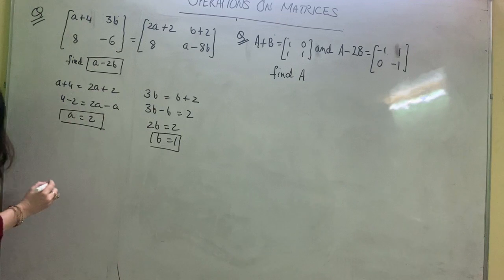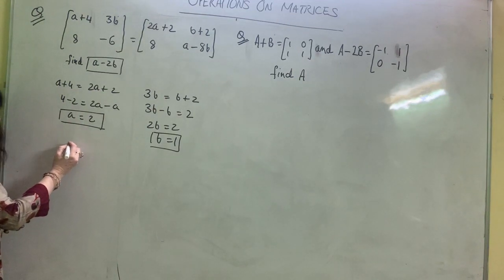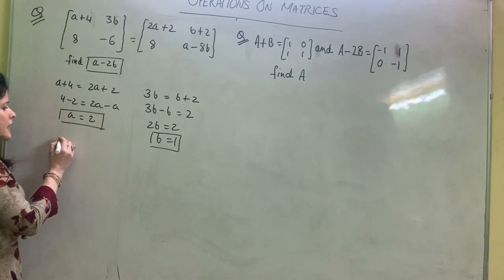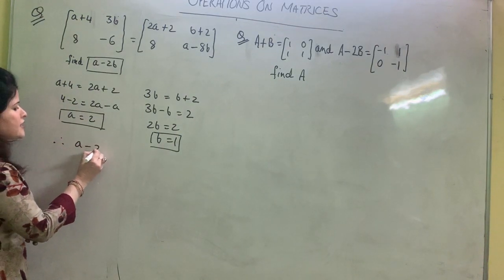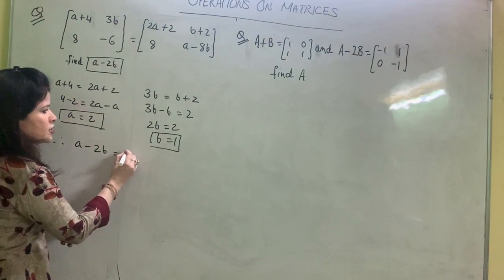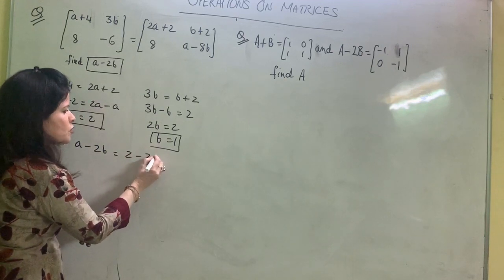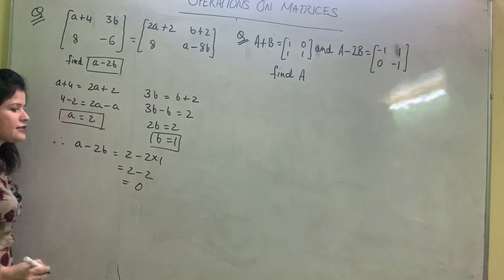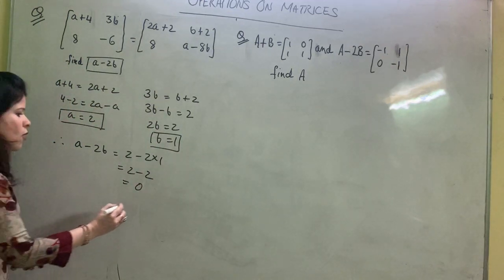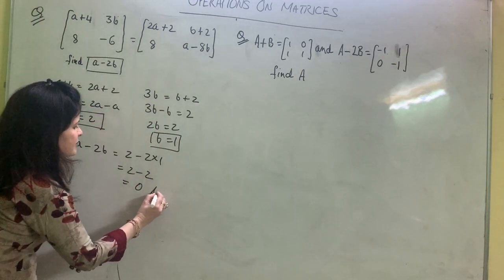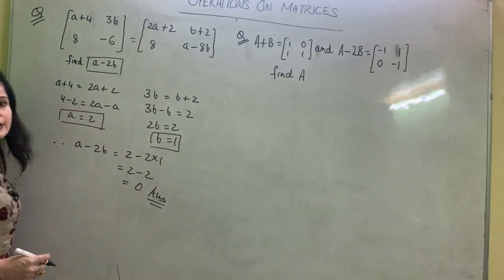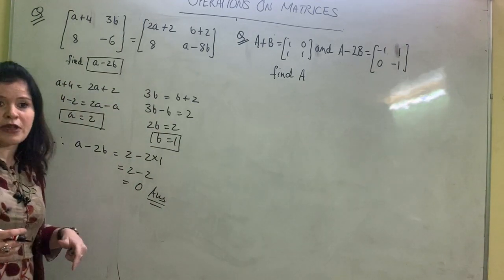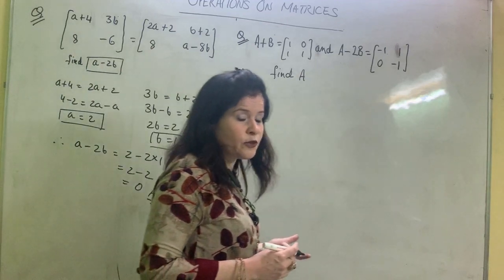Now evaluating the final answer: a minus 2b equals 2 minus 2×1 = 2 minus 2 = 0. So the answer is zero. This was a missing-type question directly from addition and subtraction.